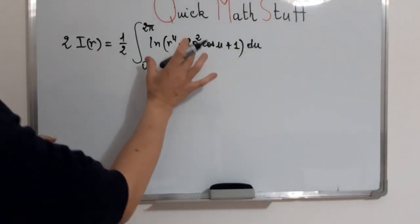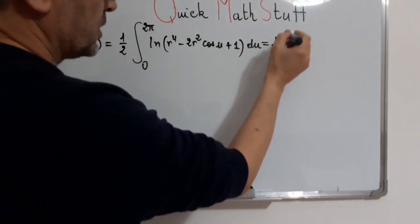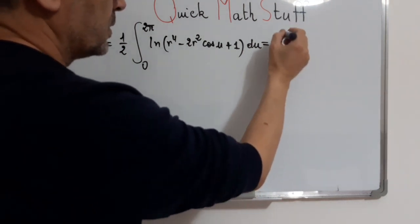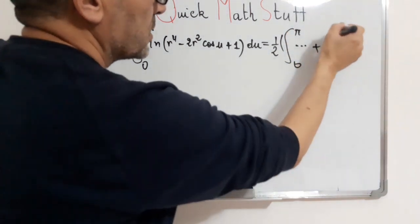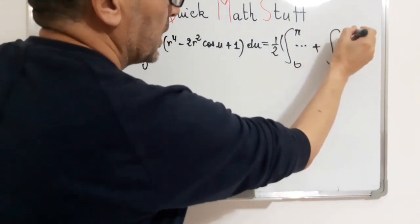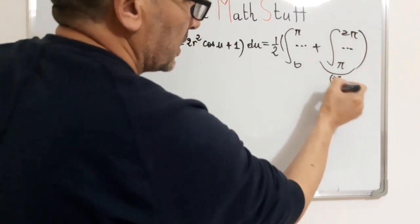Now we transform this integral in the following way. By Chasles, we will have integral from 0 to π plus integral from π to 2π. And now we will study this term.